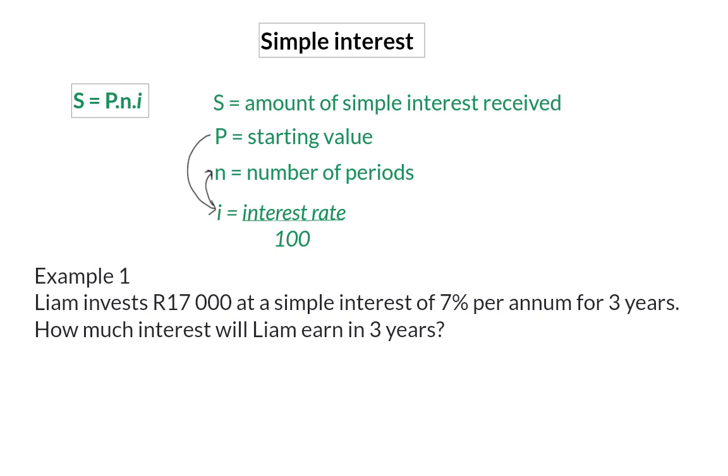We want to determine the amount of interest received, and that means we can use our given formula. We were given that the starting value was 17,000 Rand at an interest rate of 7%, and the number of periods will be 3 years. So, when substituting, the P value is 17,000 Rand that earns interest for 3 years at a rate of 7%, which is 7 over 100.